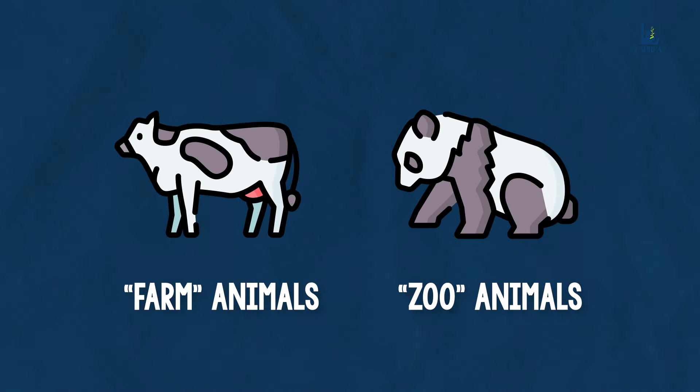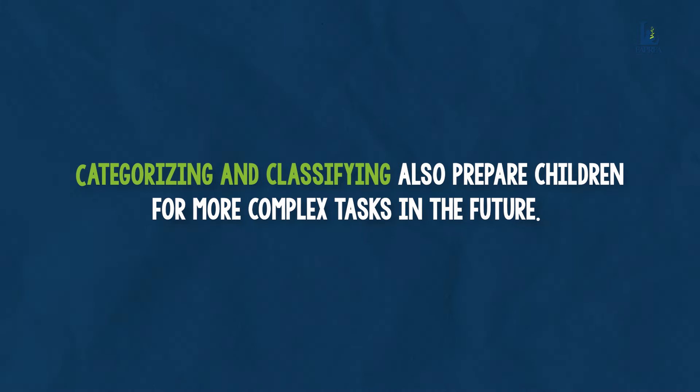For example, knowing the difference between farm animals and zoo animals really helps readers comprehend and remember information. It gives context to the story they're reading without requiring much of the student's cognitive load. Categorizing and classifying also prepare children for more complex tasks in the future — they become better equipped to handle math, science, and other subjects that require logical thinking and problem solving.